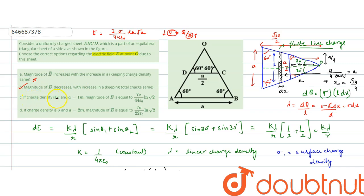Option C: if charge density is σ and A = 1, magnitude of E = 7σ/(44ε₀)·ln√2, which is what we have already calculated. Therefore, C is correct. Option D: if charge density is σ and A = 2 meters, the magnitude of electric field would be 7σ/(22ε₀)·ln√2. No — the final formula does not directly depend on A. Therefore, only B and C are correct.